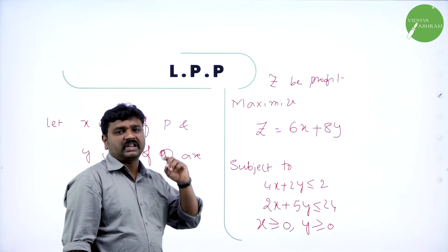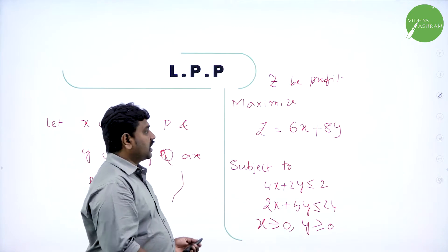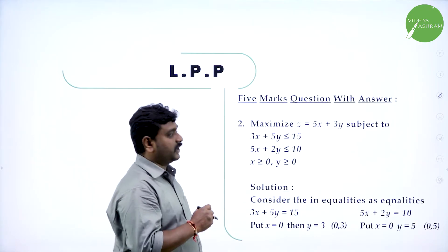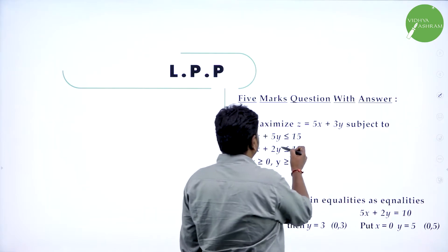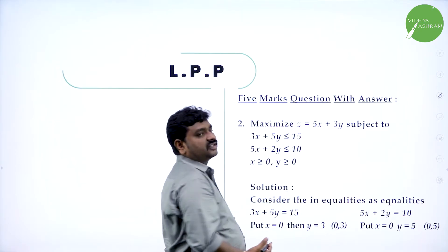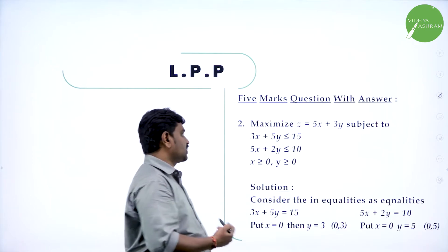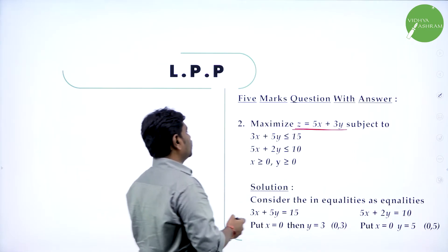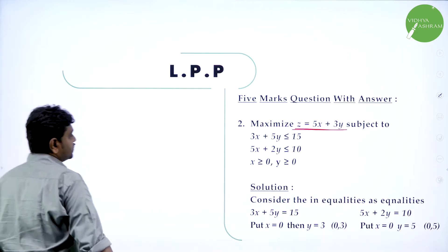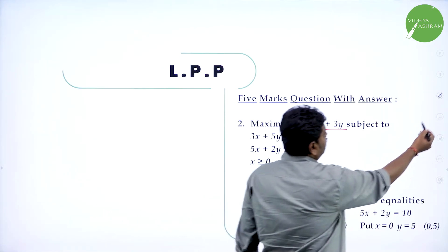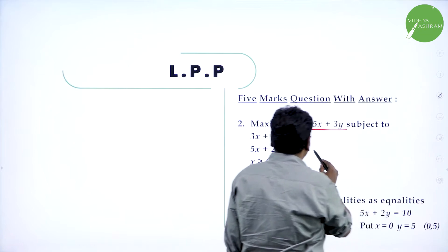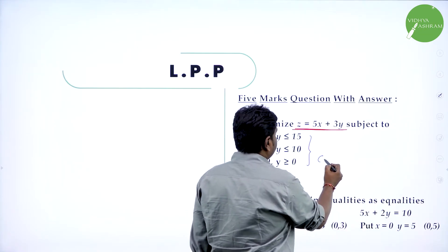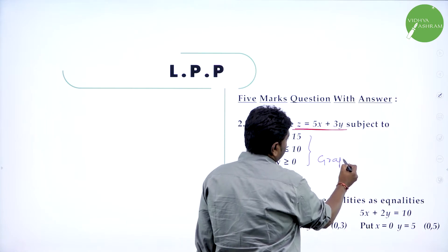So all of you got it. This is one type of problem where they ask you to formulate. The other type of problem in this chapter is where they ask you to solve graphically — maximize subject to conditions, or solve the LPP graphically. What we need to maximize is the objective function, subject to the constraints.